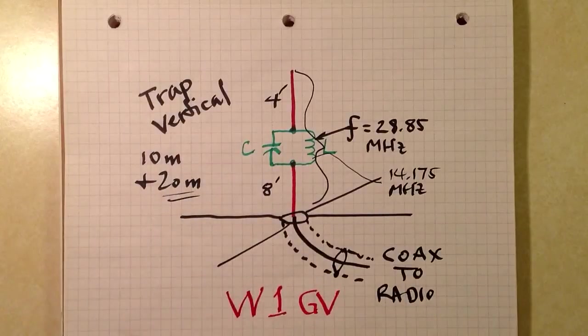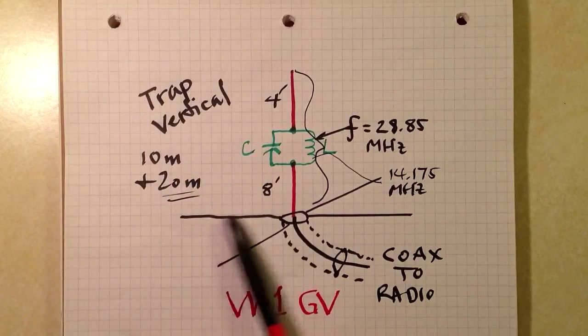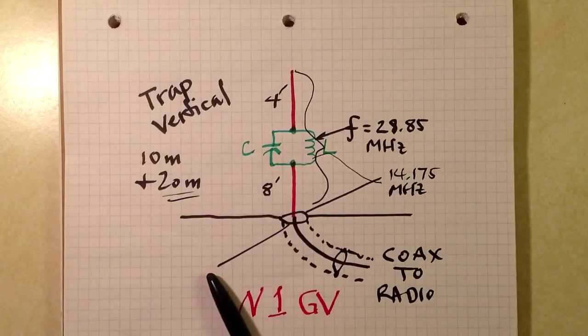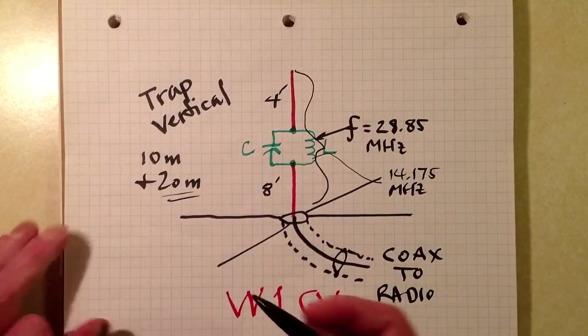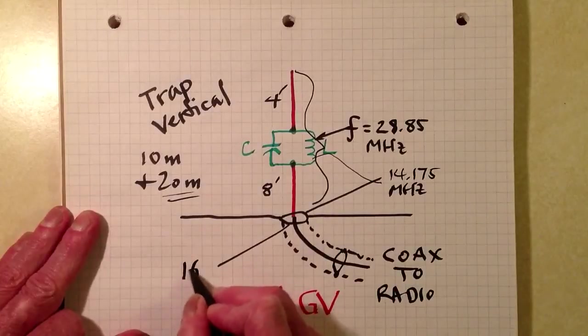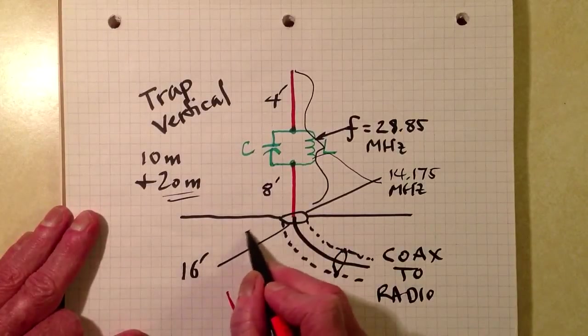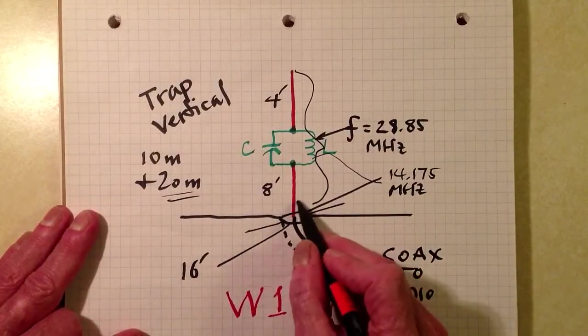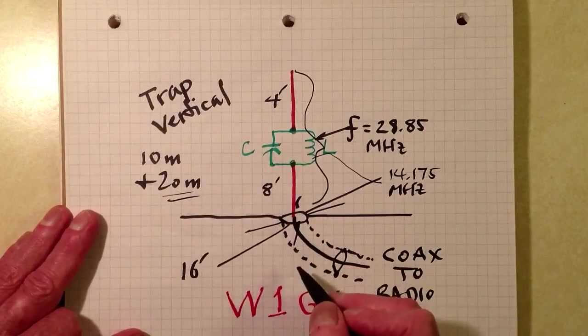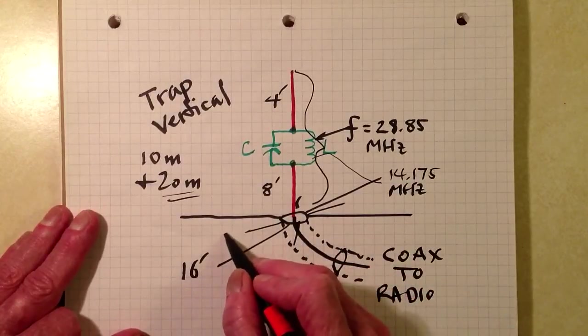This is a 10 meter and 20 meter trap vertical that I'm showing you here as an example. So you might have four radials each resonant on 20 meters. That means they'd be 16 feet. And then four more resonant on 10 meters. They'd be 8 feet.